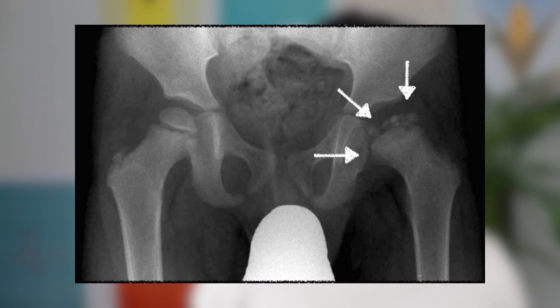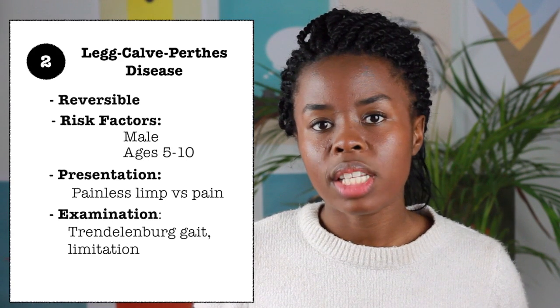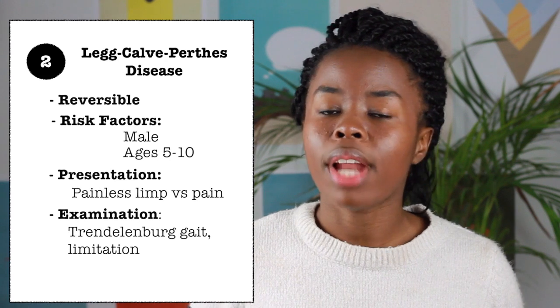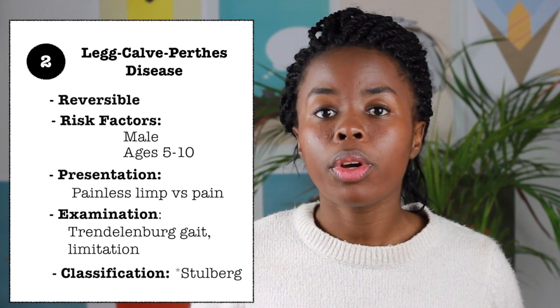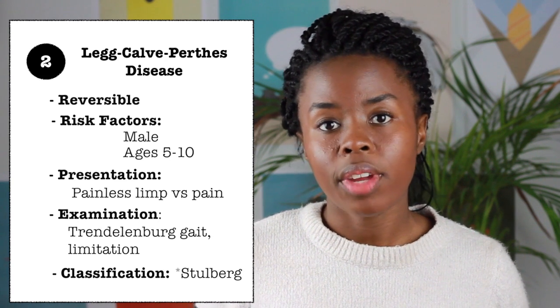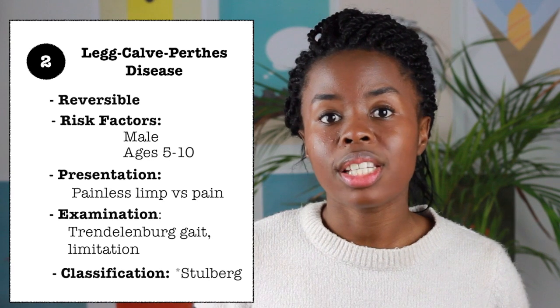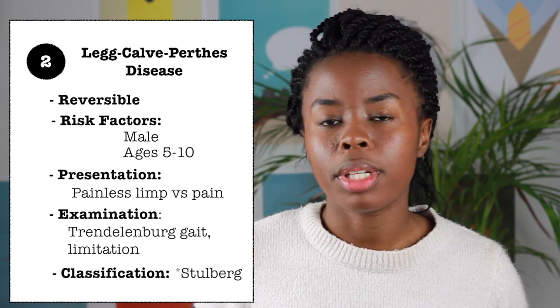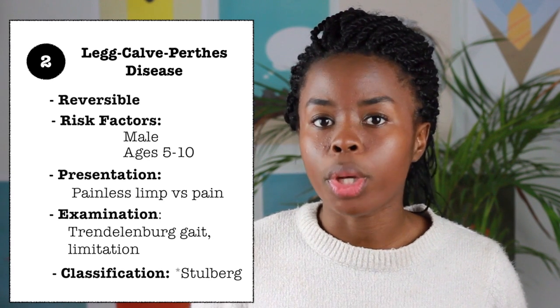The disease occurs in stages, which are evident on x-ray. You can see the fragmentation to healing stages on x-ray. Looking at this x-ray, you can see the fragmentations within the epiphysis as well as a poorly defined femoral head. LCP is classified using a number of classification systems. The Stulberg classification system is the gold standard in classifying the residual femoral head deformity as well as joint congruency. Management is either surgical or conservative.